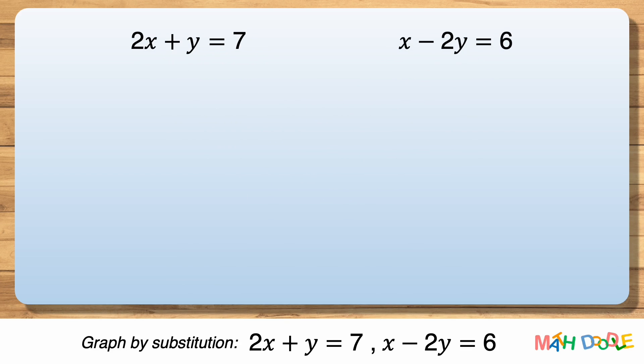First, let's solve 2x plus y equals 7 for y, so that the equation has only y on the left side. To do this, let's subtract 2x from both sides.